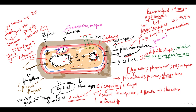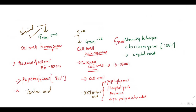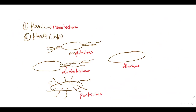So this is about the structure of a bacterial cell, which is a prokaryote. I hope you have understood how we divide bacteria into gram-positive and gram-negative based on cell wall and teichoic acids, and how we classify bacteria based on the presence of the flagella.